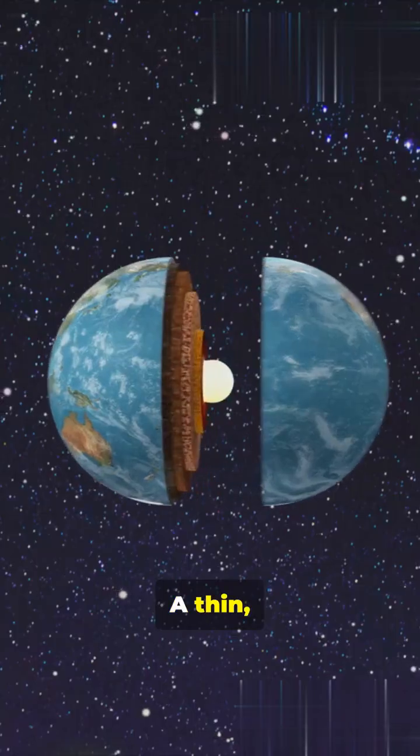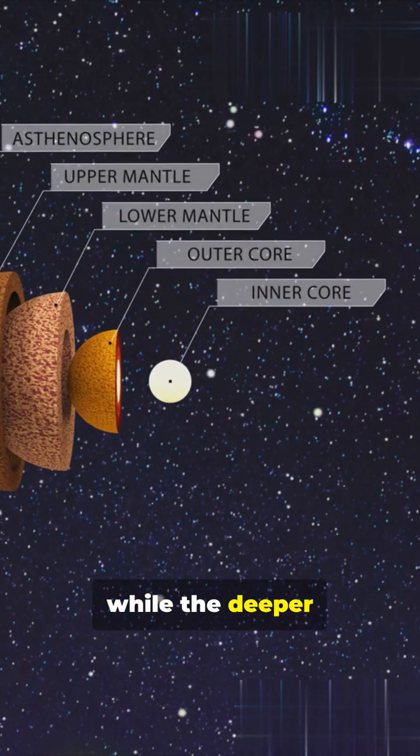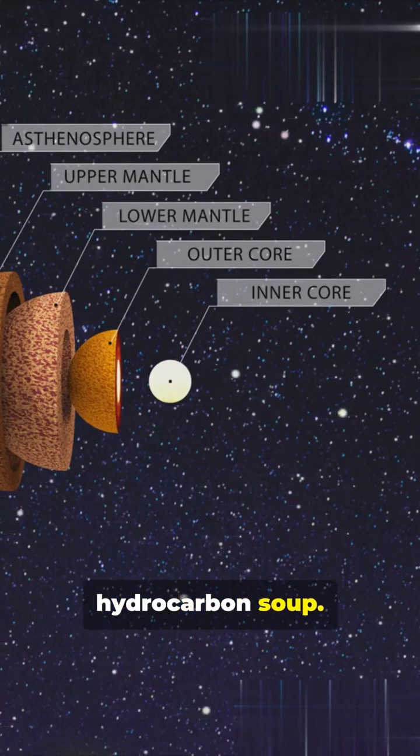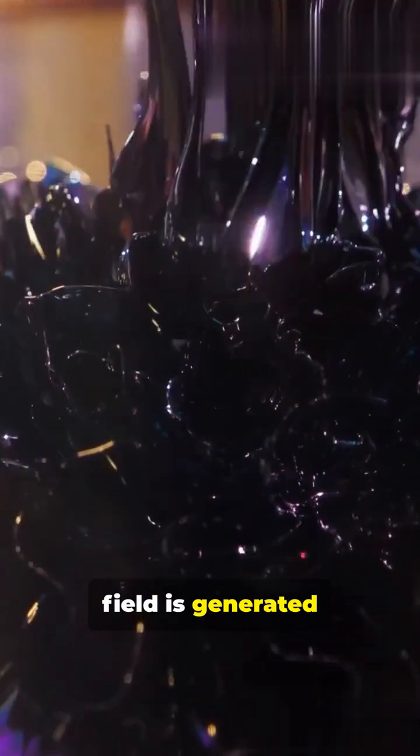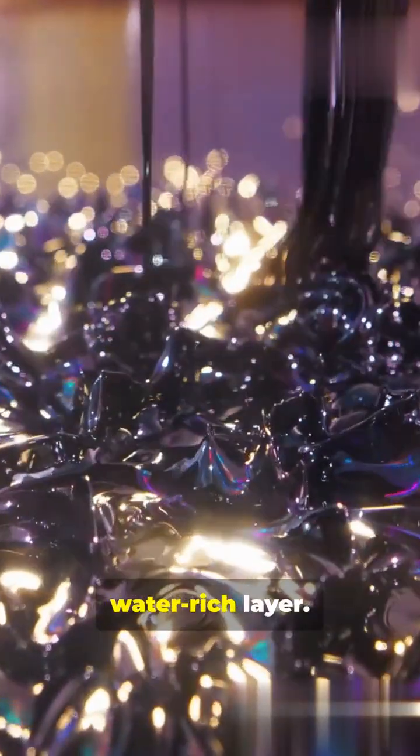A thin, upper layer becomes rich in water, while the deeper layer is a hydrocarbon soup. The crucial finding is that the magnetic field is generated only in that thin, upper, water-rich layer.